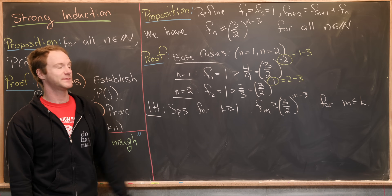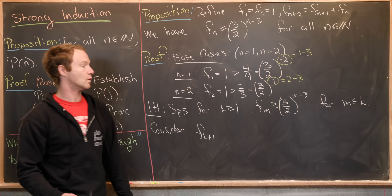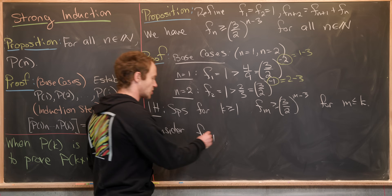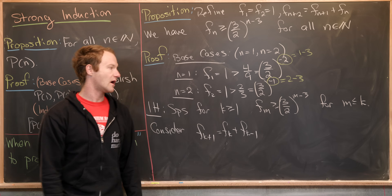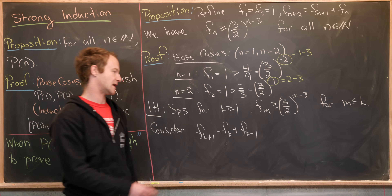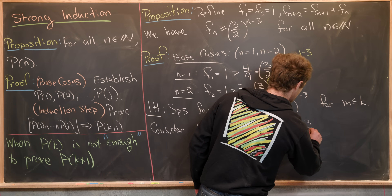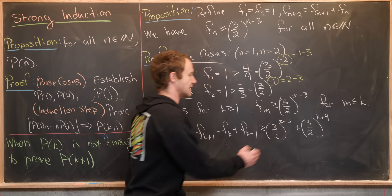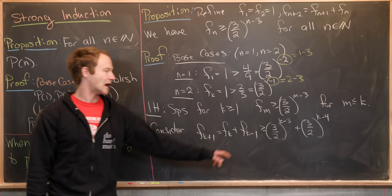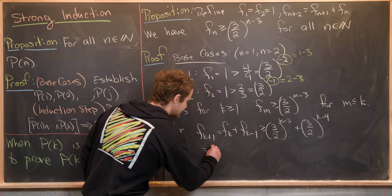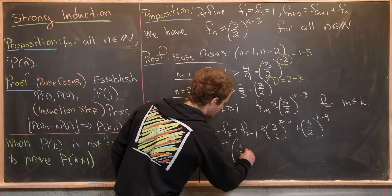We want to show the k+1 case. Consider f_{k+1}. By the recursion, that equals f_k + f_{k-1}. By the strong inductive hypothesis, this is ≥ (3/2)^{k-3} + (3/2)^{k-4}, applying the inequality with m=k and m=k-1. Factoring out the greatest common factor gives (3/2)^{k-4} times the quantity (3/2 + 1).